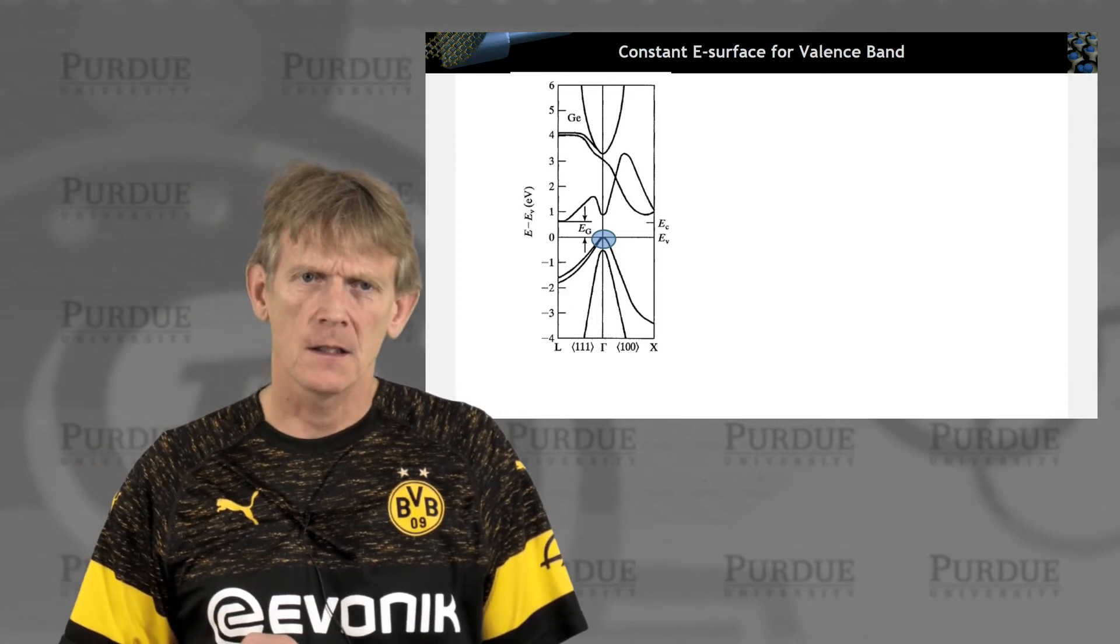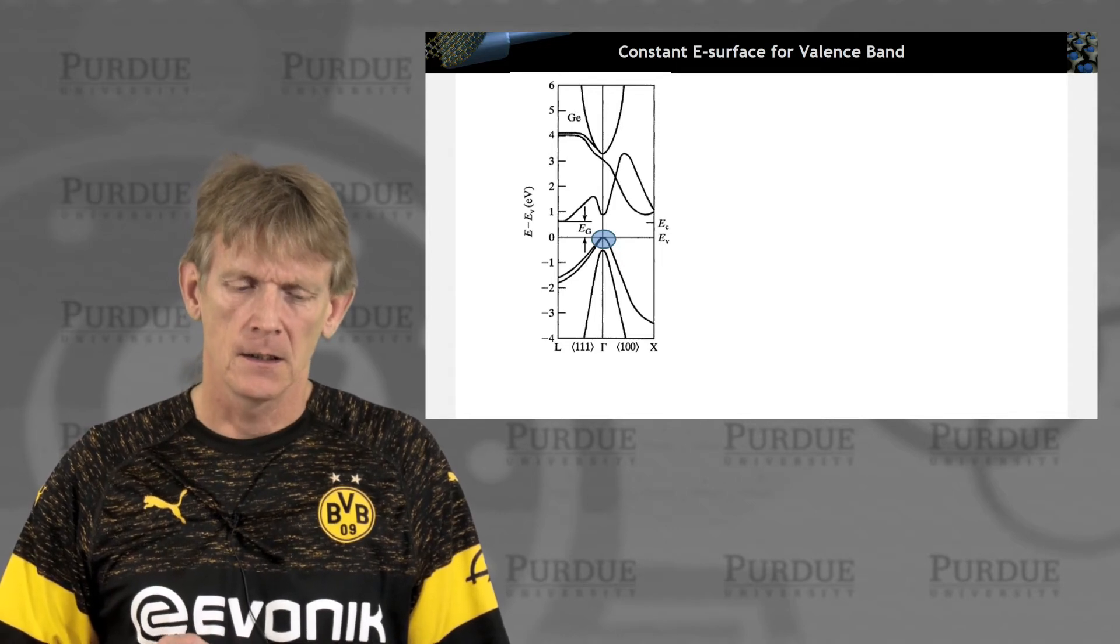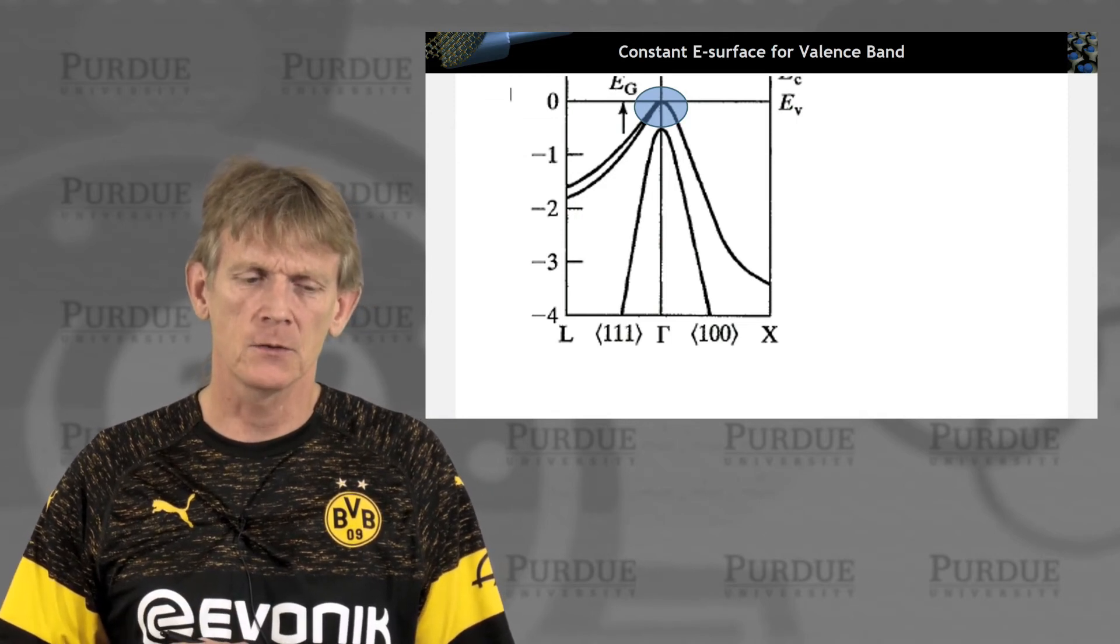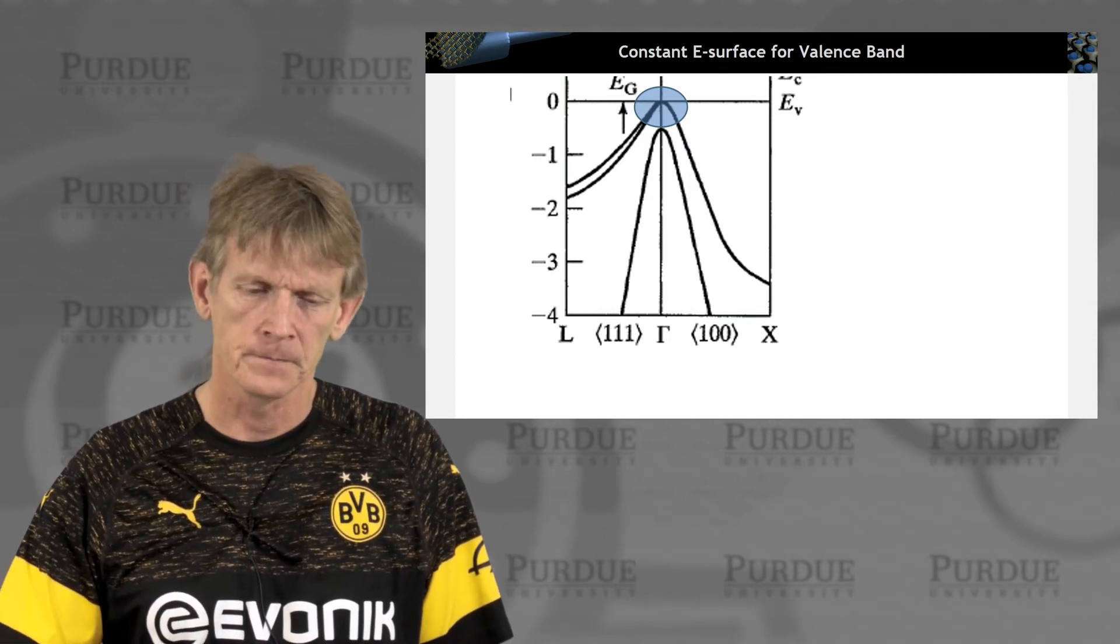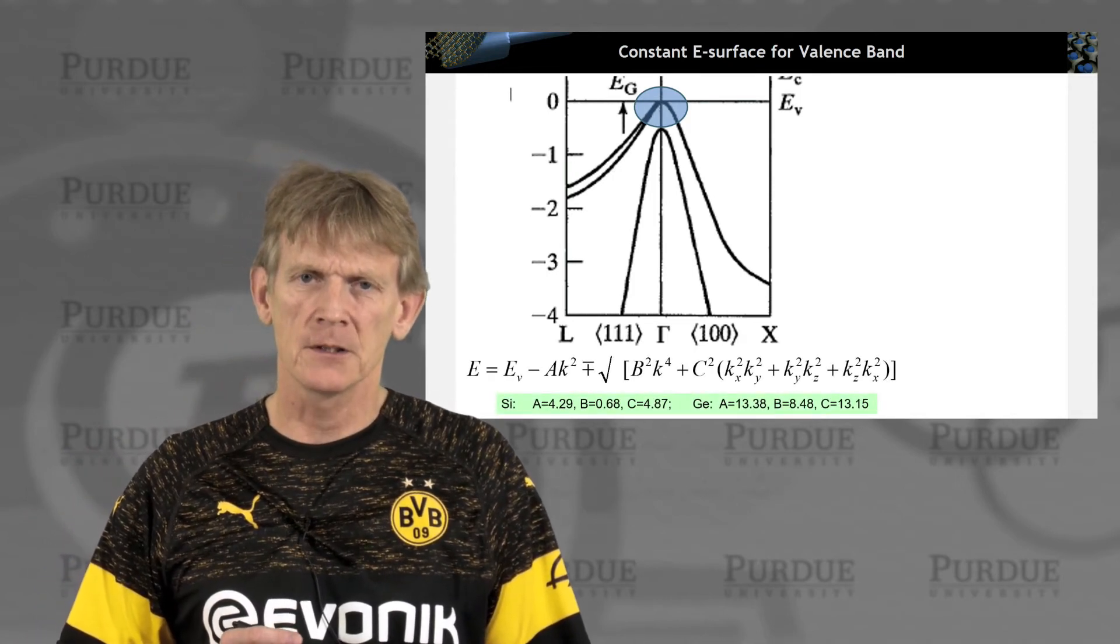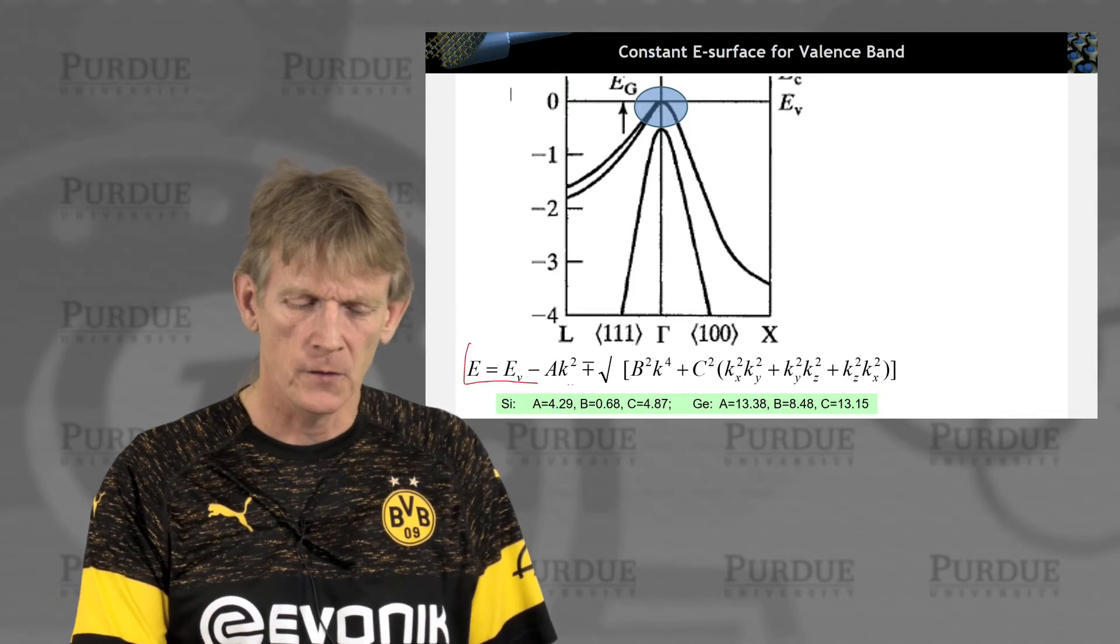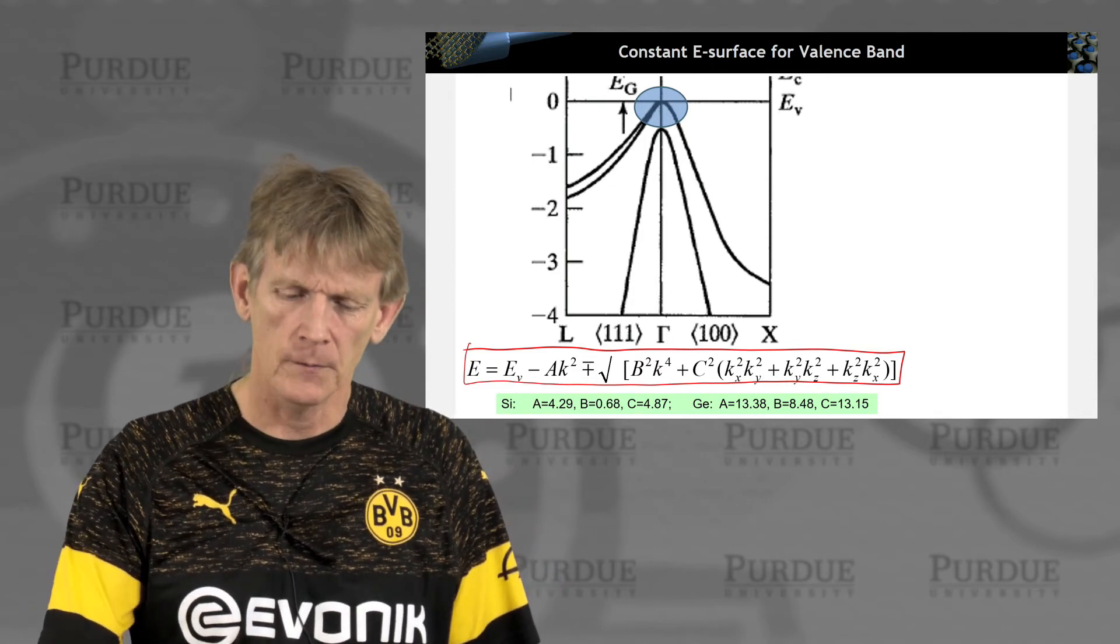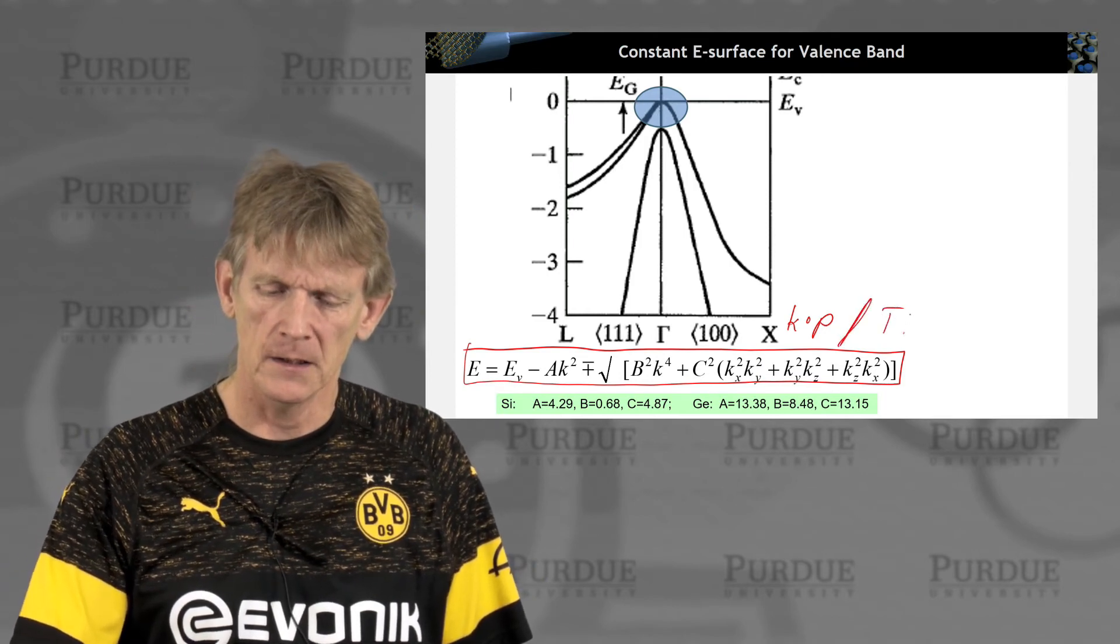Now, valence bands are a completely more complicated piece of art. And I'm just going to walk through it very briefly. In general, we make approximations to them in the fundamentals course, and we get into the details of valence bands much later. So, here what you have is a valence band depiction, in this case germanium.